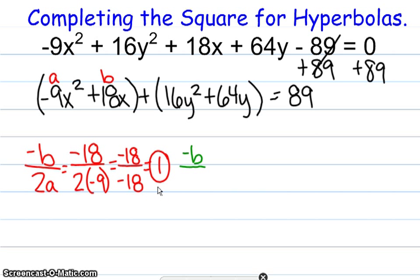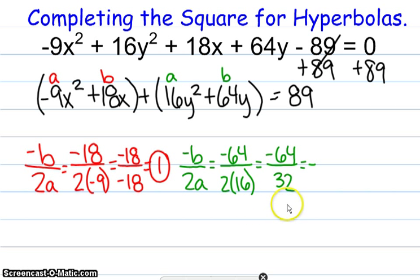Let's go through and repeat the process for our y set. 16 is our a this time, 64 is our b. Opposite of a positive 64 is negative, and then 2 times 16, we know that to be 32. And when we go through and do our division, we end up with negative 2 as our second part of our center.